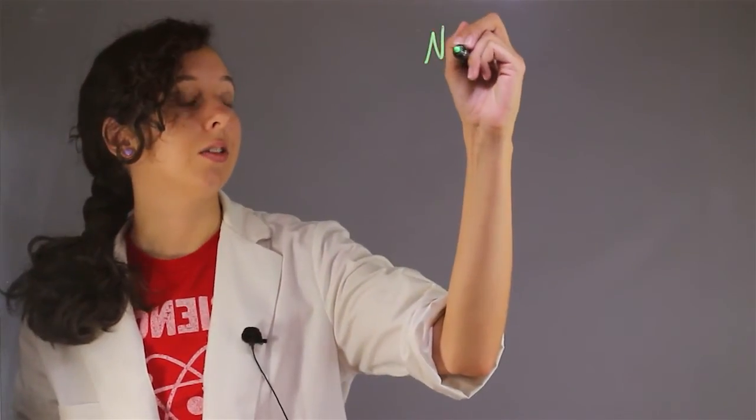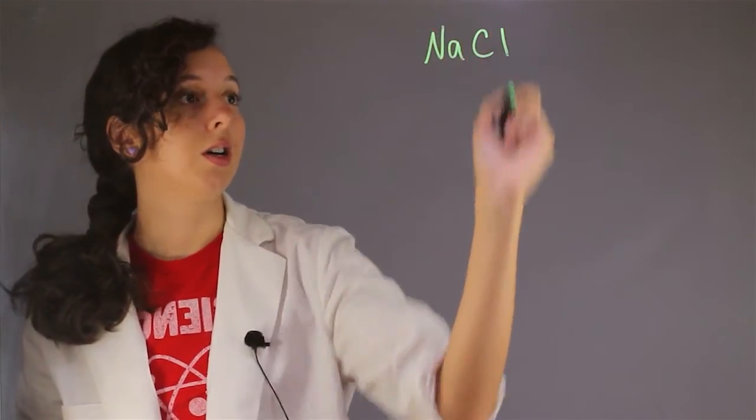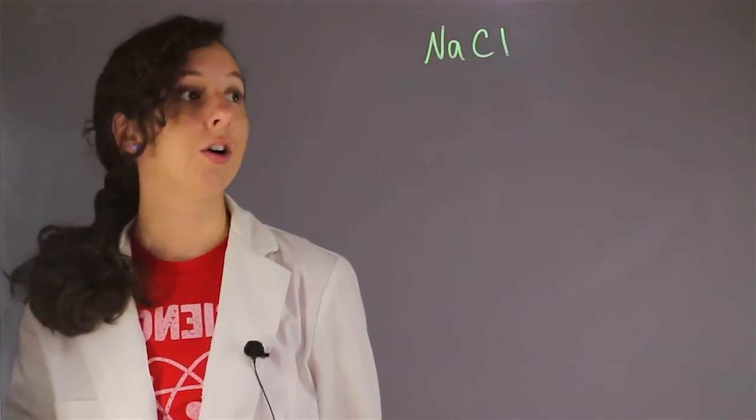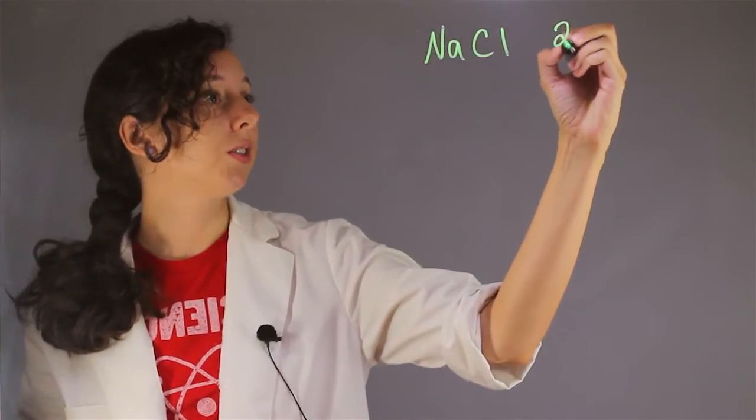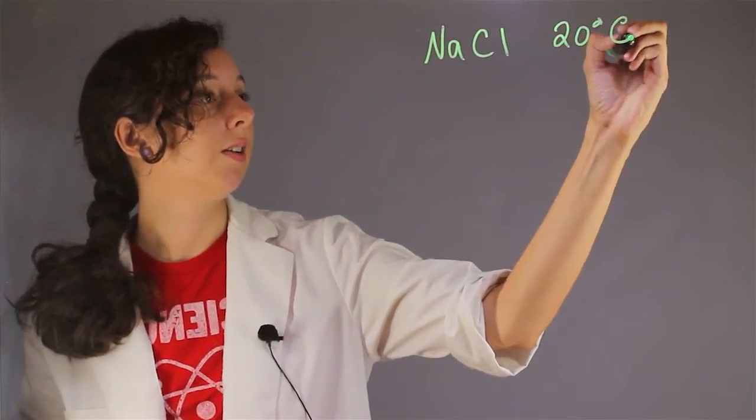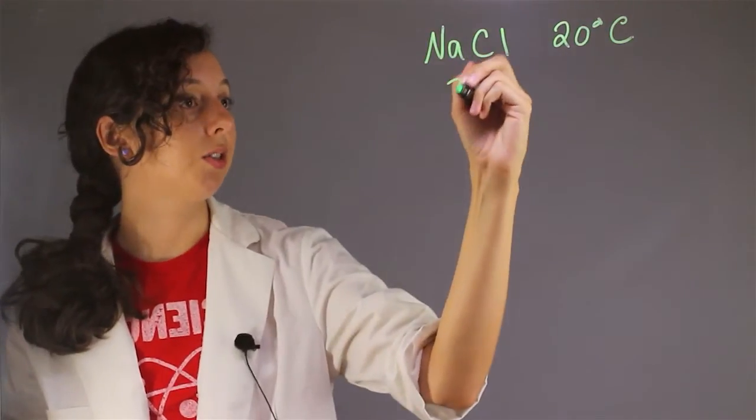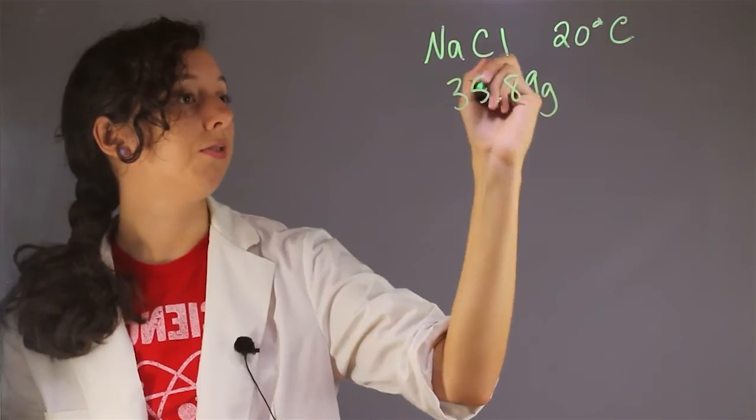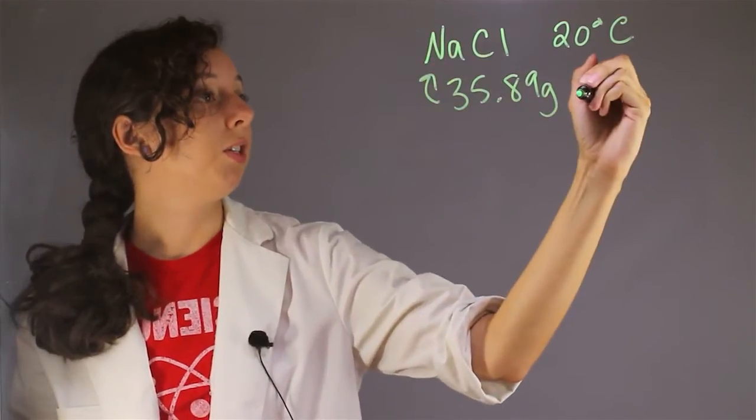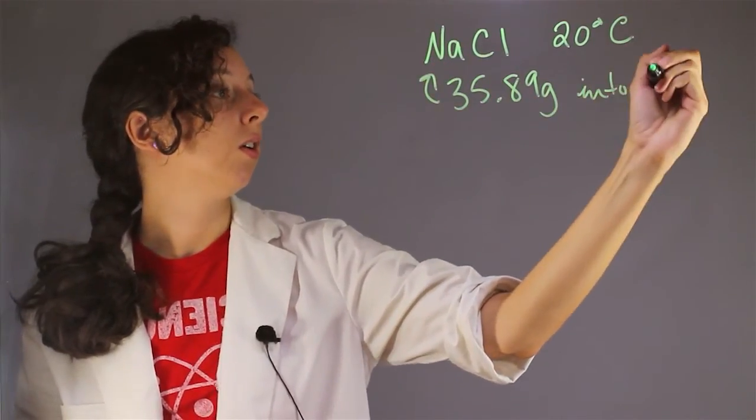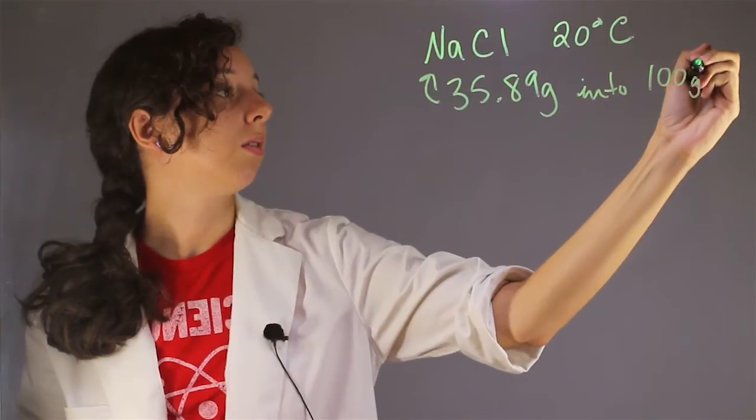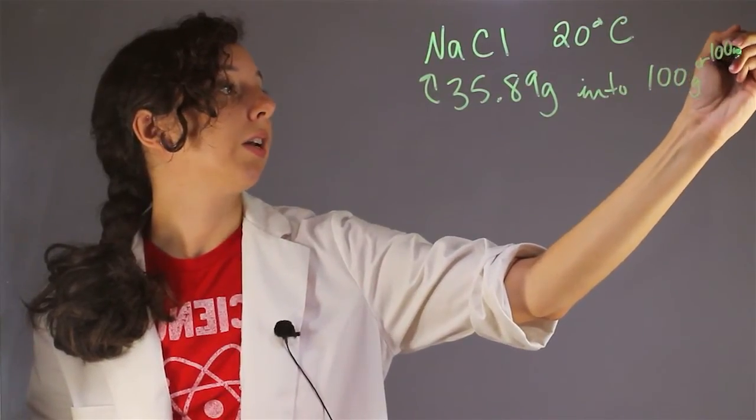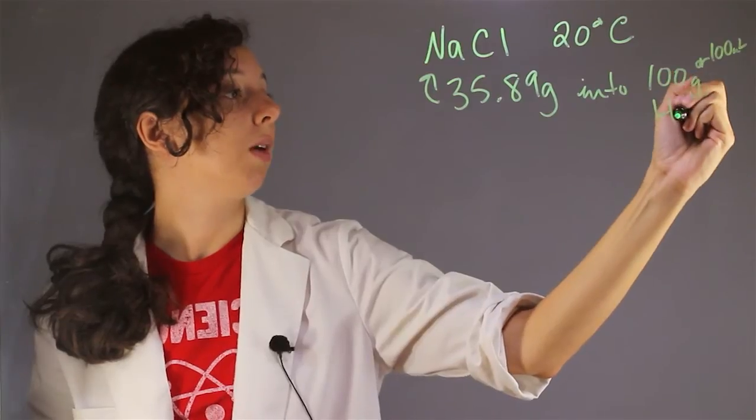So let's look at an example. Let's take simple table salt or sodium chloride. Now, when you have water that's 20 degrees Celsius, your solubility is 35.89 grams of salt. We'll go into 100 grams, or remember, that's the same as 100 milliliters of H2O.